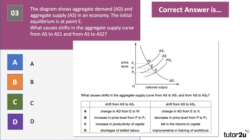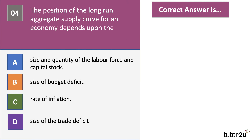The correct answer is D. Shortages of skilled labour are likely to increase wage costs, causing an inward shift of aggregate supply. Improved training — improving the human capital of the workforce — is likely to decrease costs through increased productivity, shifting the aggregate supply curve outward to the right.